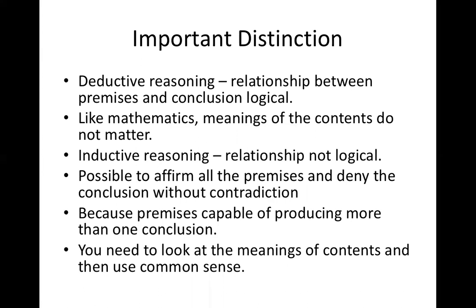We saw four different kinds of valid deductive arguments, and any of them can be valid but not true. So the logical relationship is very important for the validity of deductive arguments. But for inductive reasoning, the relationship between the premises and the conclusion is not logical. So it is possible to affirm all the premises and deny the conclusion without contradiction, because the premises are capable of producing more than one conclusion. We saw in our last example of an inductive argument that it could generate more than one possible conclusion.